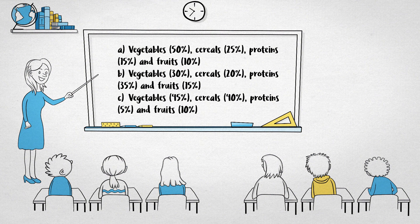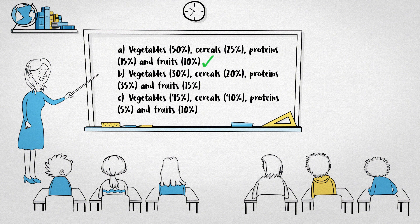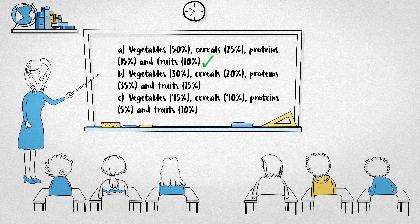Vegetables are the most important. They should make up half of the plate. The rest should be divided between cereals, proteins and fruits.